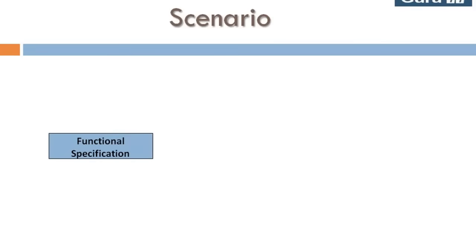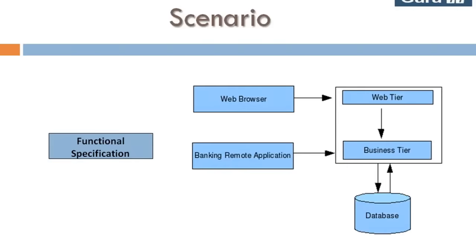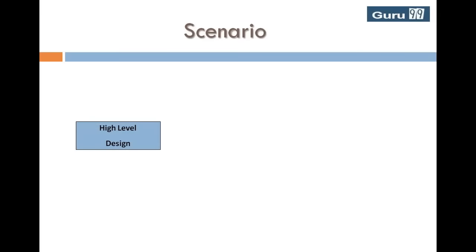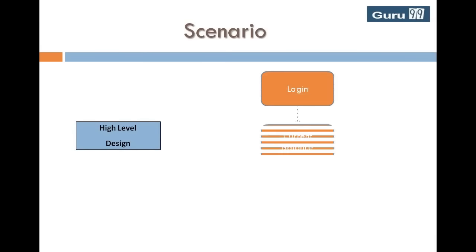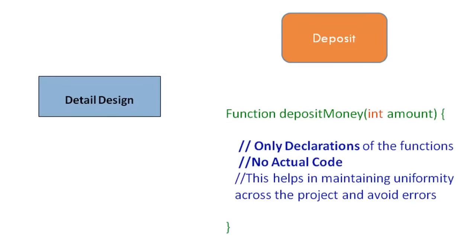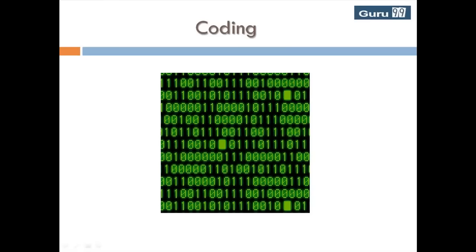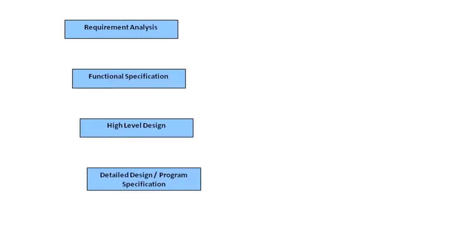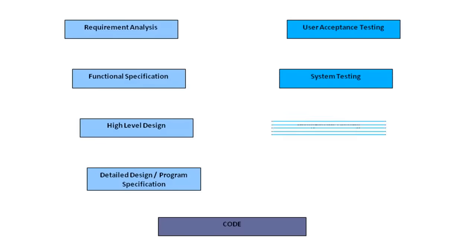Next, in the functional specification stage, architecture, database, and operating environment design are finalized. In the high level design stage, the application is broken down into modules and programs. In the detail design stage, the pseudocode for functions for each module is documented. Next, actual coding begins. This is the software development cycle of the V model. During all these phases, the tester is not sitting idle waiting for the coding to complete, but is doing corresponding testing activities.